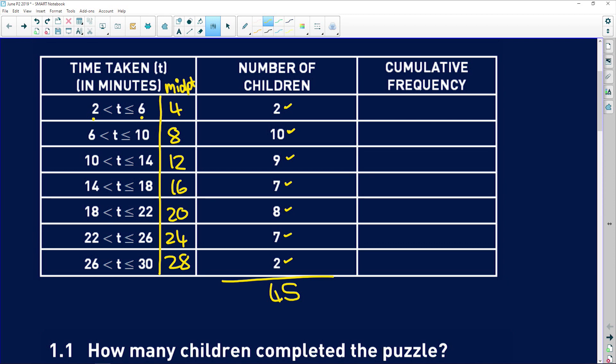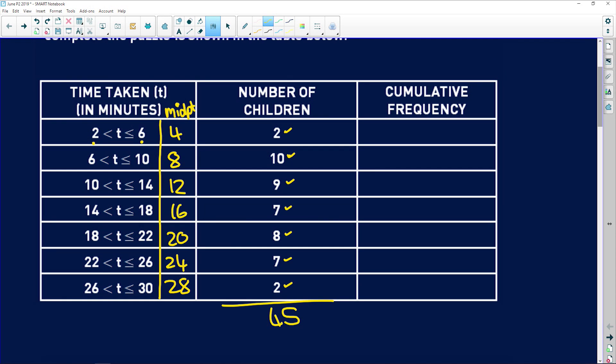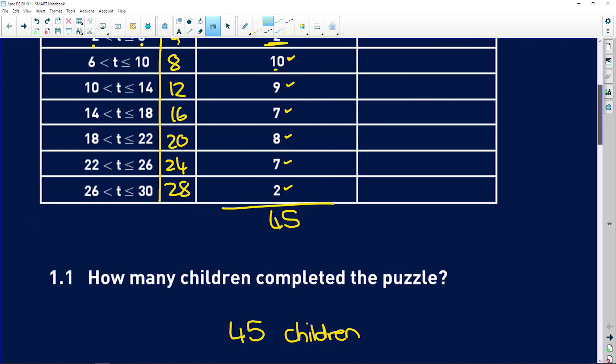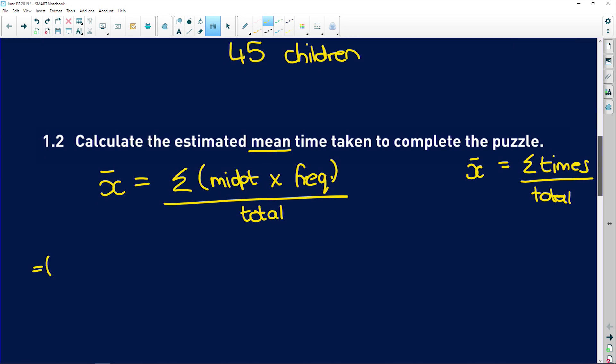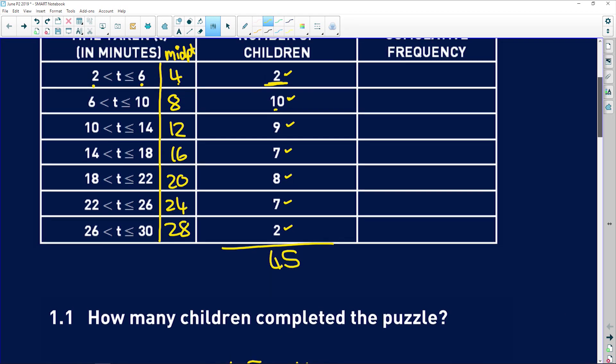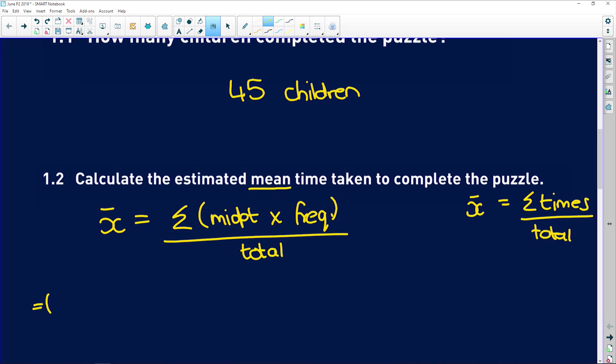And that would be what we use as our times. But obviously there were two children that took an average of four minutes, then there were ten children who took eight, so you need to take the midpoints and multiply by the frequencies. So you would say the sum of the midpoints times the frequency, which is the number of children, over the total number of children. So we're going to get quite a long sum. We're going to have four times two plus eight times ten plus 12 times nine plus 16 times seven.